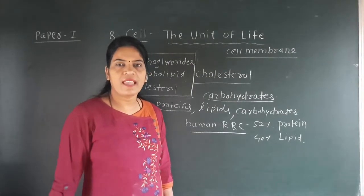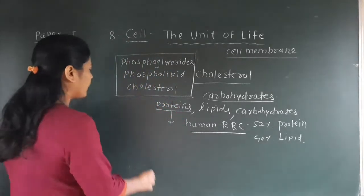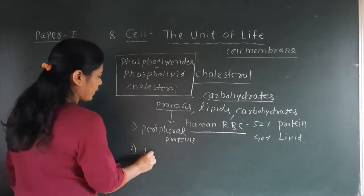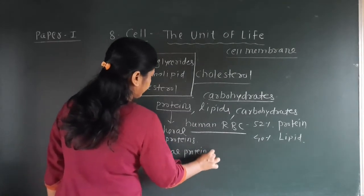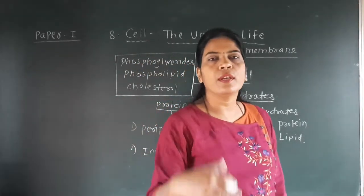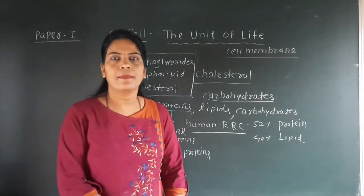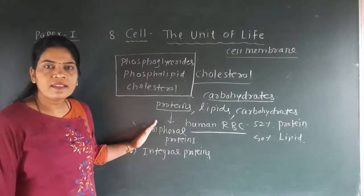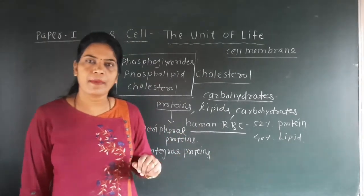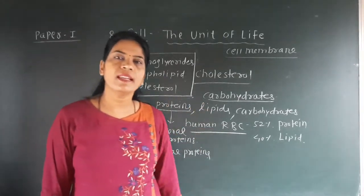The protein part present in this lipid bilayer is of two types. One type is called peripheral proteins and another type is called integral proteins. Peripheral protein is present on the surface — any protein present on the surface is called a peripheral protein. When this protein is present inside the cell membrane, we call it an integral protein.